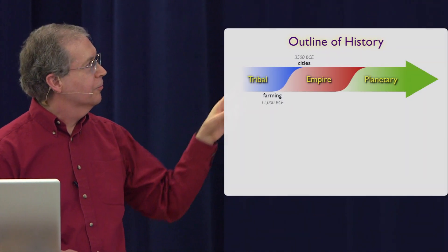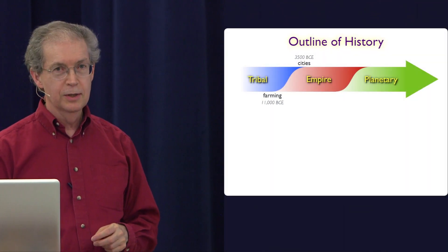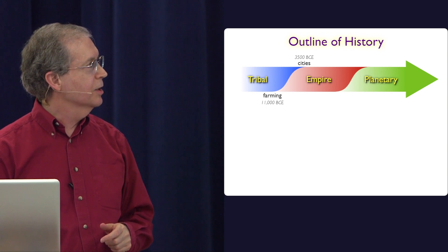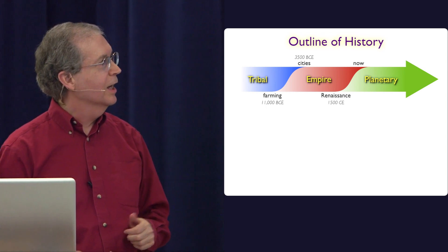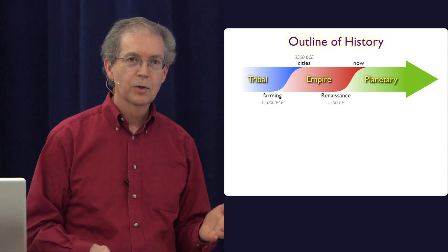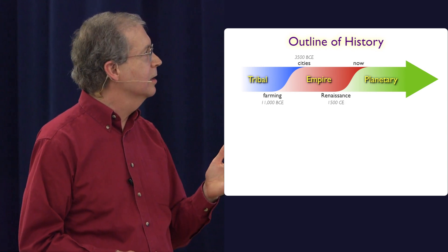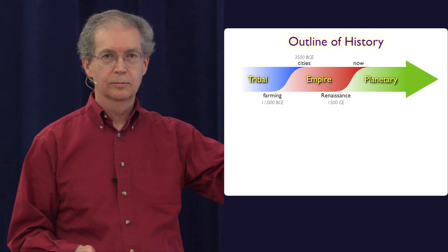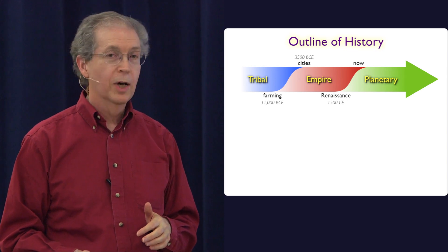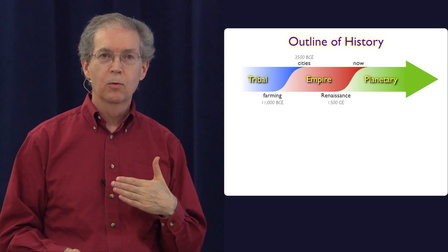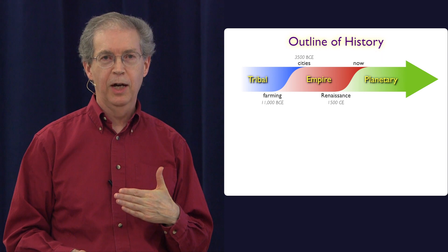So the first transition starts with farming and goes to cities. The second transition starts with the Renaissance. And we don't know quite where it ends. We're not at the end yet. We're still in the later parts of it. But I think that we are at a point where what we do is going to be hugely impactful.